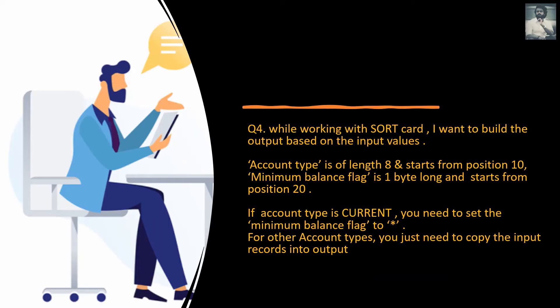While working with a SORT card, I want to build the output based on input values — based on some condition. Account type is of length 8 in my input file, starting from position 10. Another column, Minimum Balance Flag, is one byte long and starts from position 20. The requirement is: if account type is 'CURRENT', set the Minimum Balance Flag to star (*). For all other account types, just copy the input records to output.